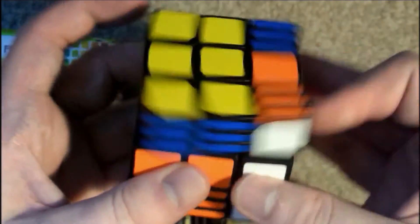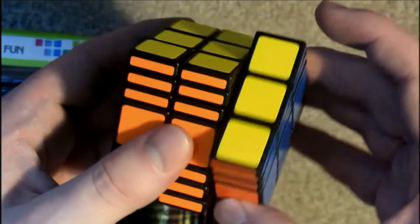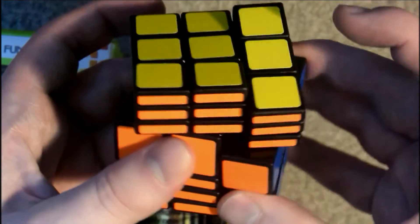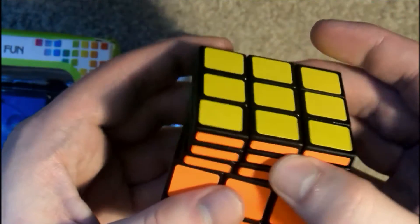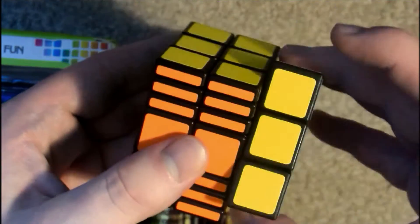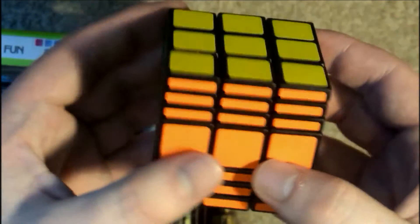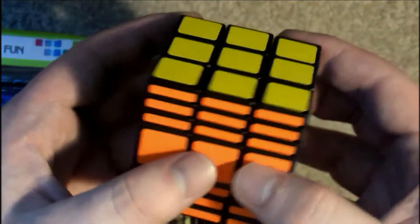So you can scramble this like a 3x3 as well. Oops. Let's see what the corner cutting is like. It's okay. Yeah, it's pretty good. So let's give this a scramble.